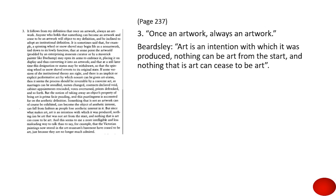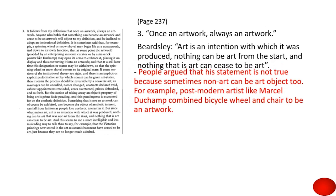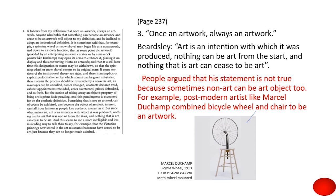Third objection (page 237): 'Once an artwork, always an artwork.' Beardsley basically says art is an intention — what is produced. Nothing can be art from the start and nothing that is art can cease to be art. People argue this is not always true, because sometimes non-art can become an art object. For example, postmodern artist Marcel Duchamp combined bicycle wheels and a chair to make an artwork produced in 1913, meaning a non-art object can become an art piece.